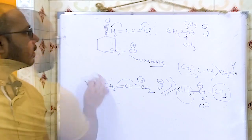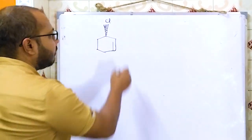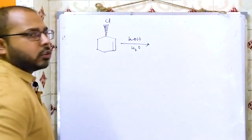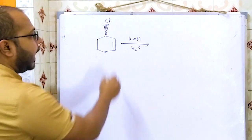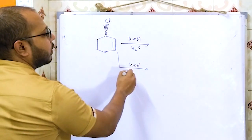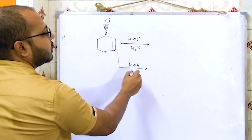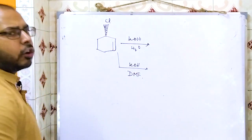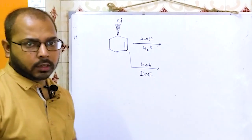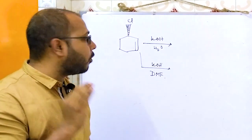Next question: KOH is given with H₂O as solvent in one case, and DMF or methyl cyanide (polar aprotic solvent) in another case. Which type of product will you get? This is very important and has appeared in exams several times. The carbocation stability order is: 3-degree > 2-degree > 1-degree.